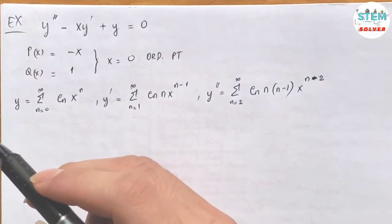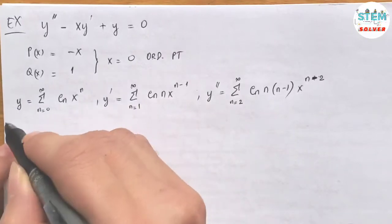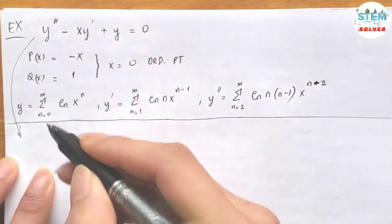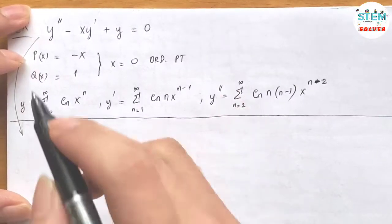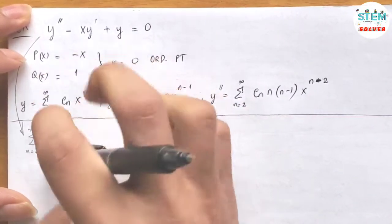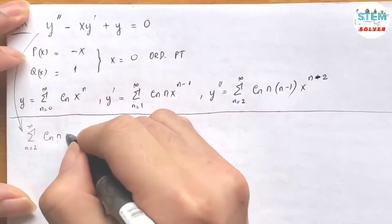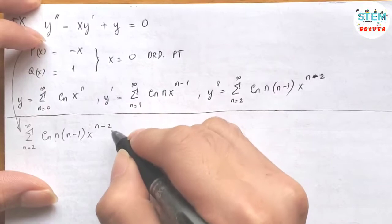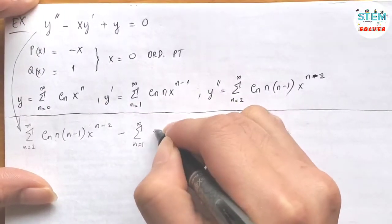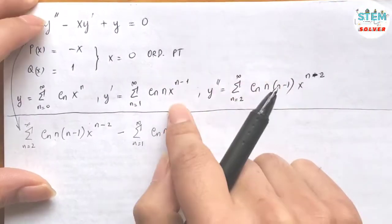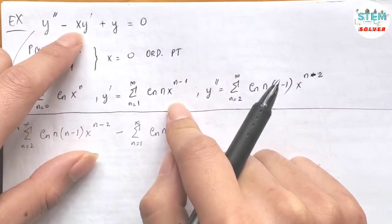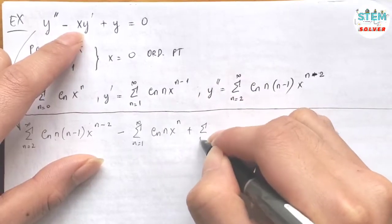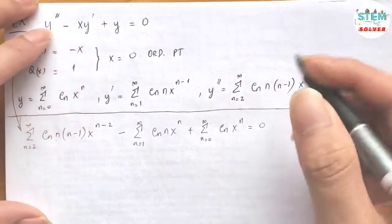Then we are going to plug this into the differential equation. So I'm going to have power series from zero to infinity cn n times n minus 1 x to the n minus 2, minus power series from 1 to infinity cn x to the n, plus power series from zero to infinity cn x to the n is equal to zero.